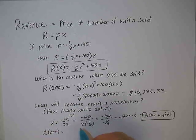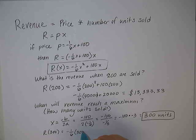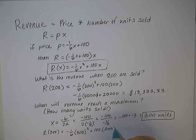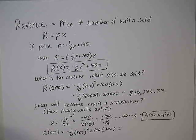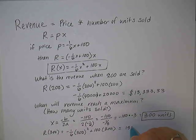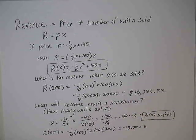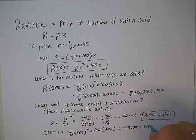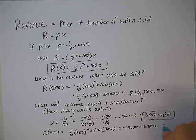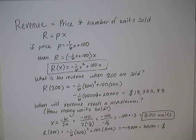What will that maximum revenue be? Well, that is the Y value of our problem, so we plug that number in. R of 300 will give us that value. Negative one-sixth times 300 squared plus 100 times 300 will equal 15,000, well, negative 15,000, plus 30,000.